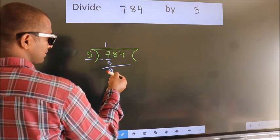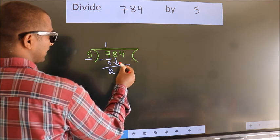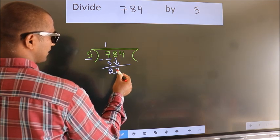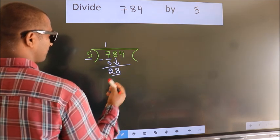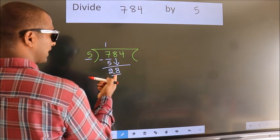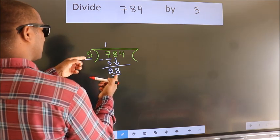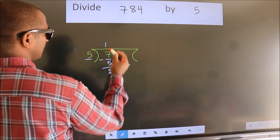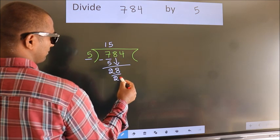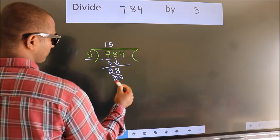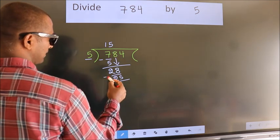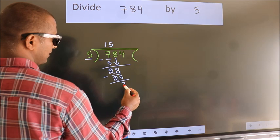After this, bring down the beside number. So, 8 comes down. So we have 28. A number close to 28 in the 5 times table is 5 fives, which is 25. Now we subtract. We get 3.